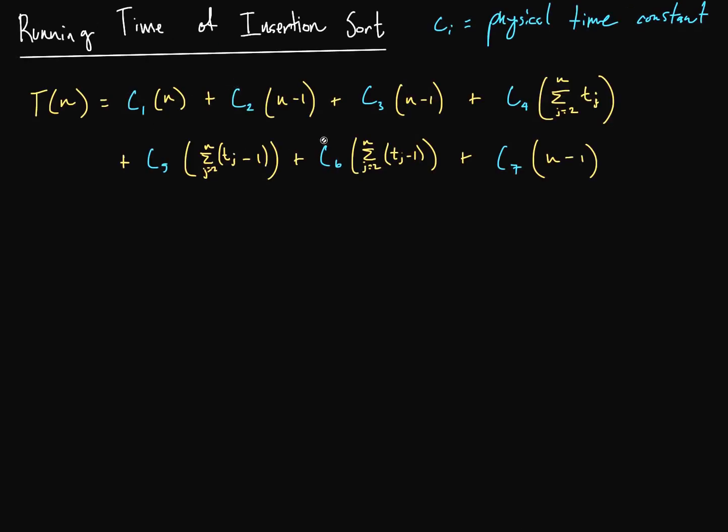So to start off, we have all of those things. And now here is our function. We call this T(n) for running time, where obviously n is the size, the input size of insertion sort. And all of these constants out here are basically some sort of physical time constant. This is all hardware kind of stuff. How long does it take to run that very first line of code, that first for loop? How long does it take to actually execute that? How long does it take to execute the next line, and the next line, and so on?